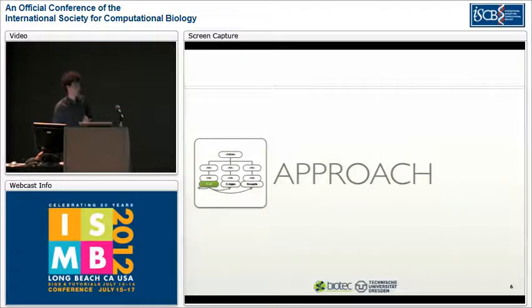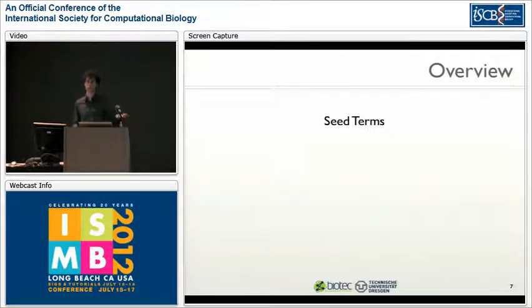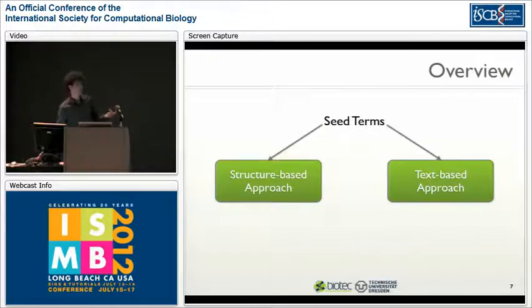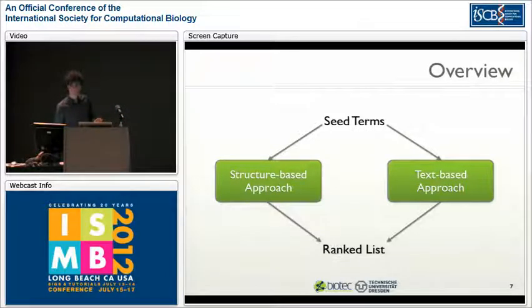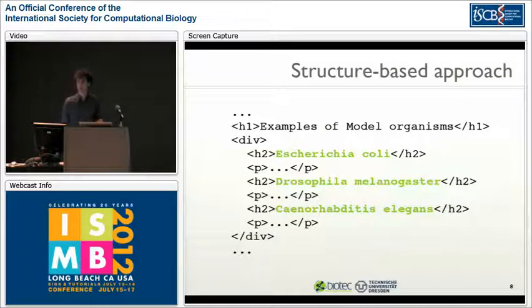One step in this automation is our idea of sibling generation using set expansion techniques. For each sibling generation process we start from a number of C terms. From those C terms we use two approaches: the first is a structure-based approach and the second is a text-based approach. In both approaches candidate siblings are generated, which are then combined into a ranked list.